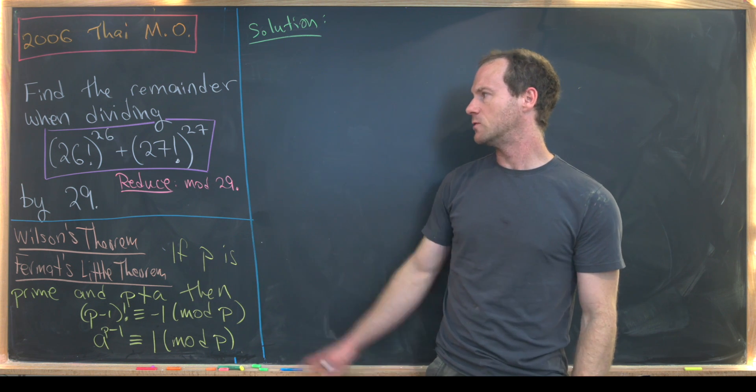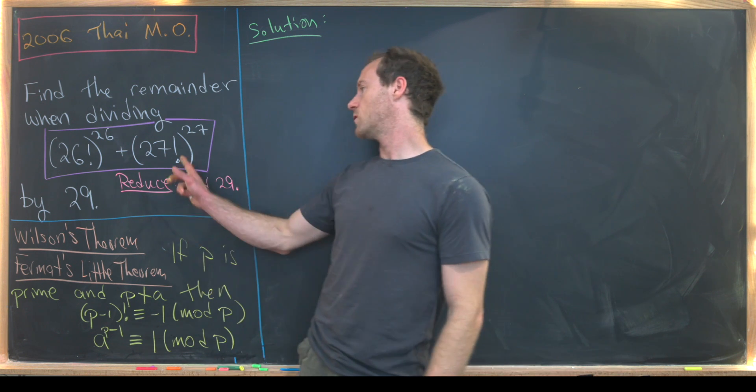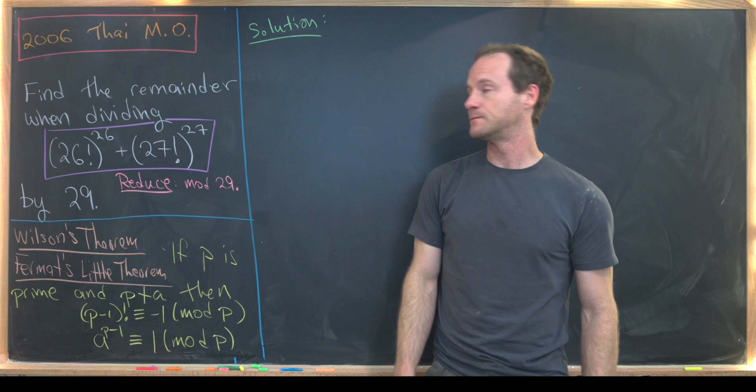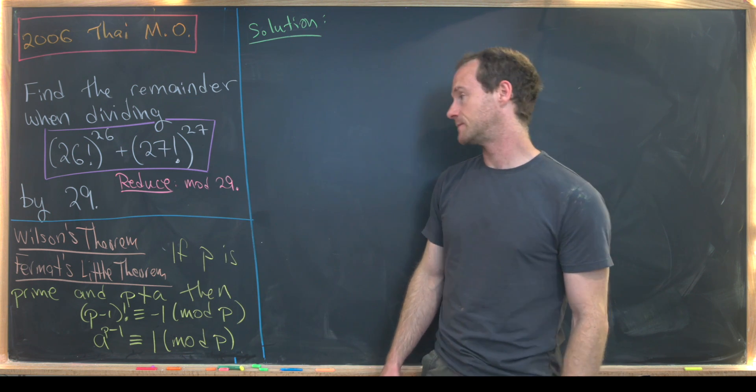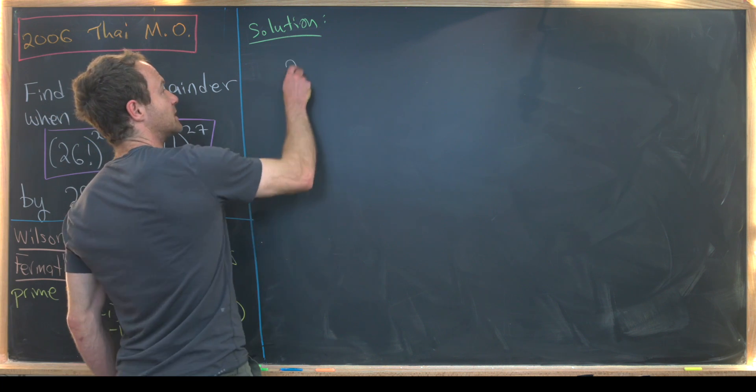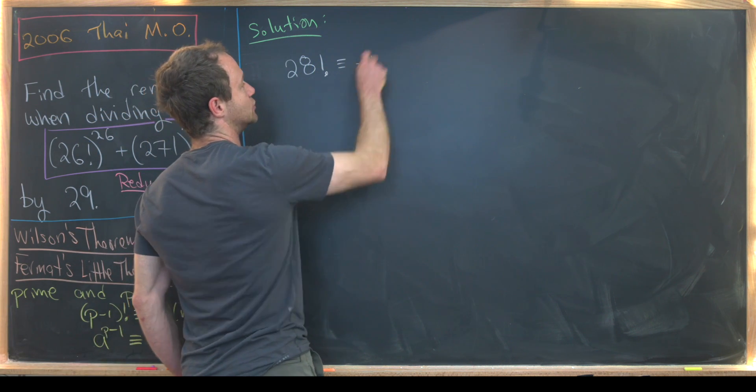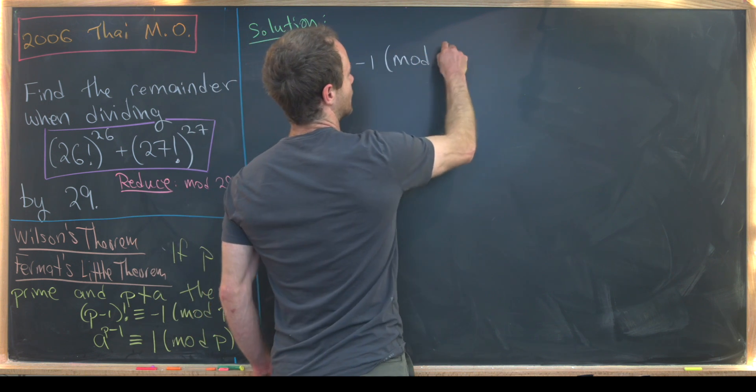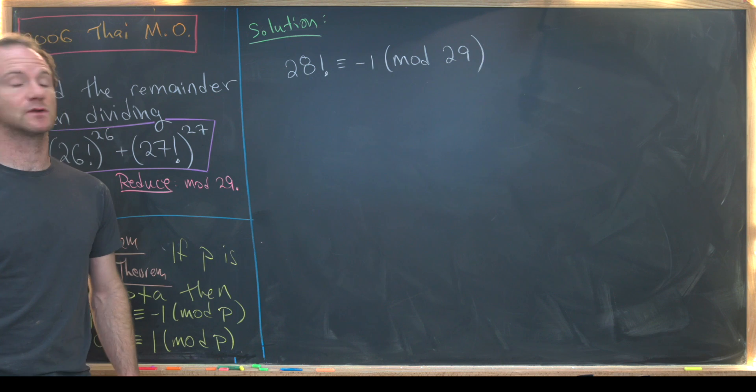So now that we've done this review, we've talked about the problem, let's go ahead and get started. We'll focus on these two parts individually, starting with this 27 factorial to the 27. So let's first notice by Wilson's theorem, we have that 28 factorial is congruent to minus 1 mod 29. So that's pretty obvious because 28 is 29 minus 1.